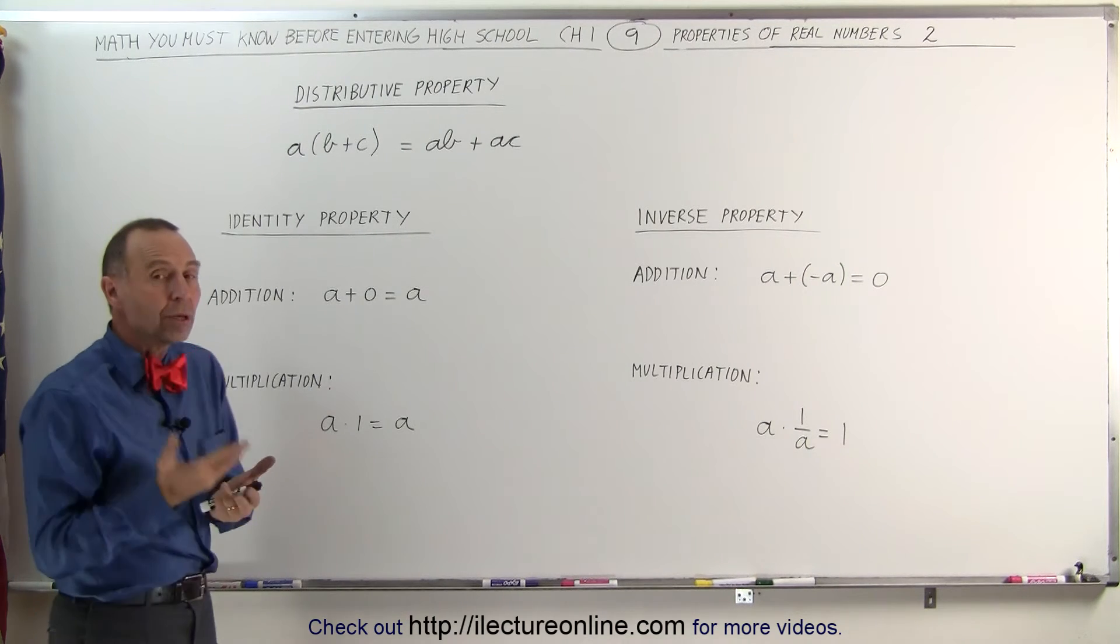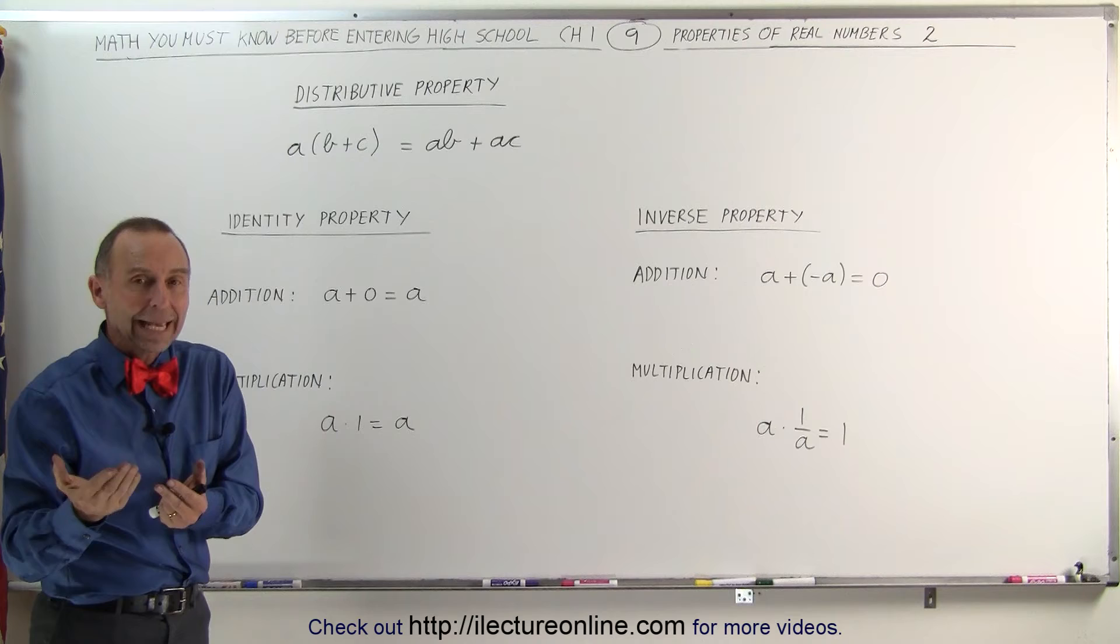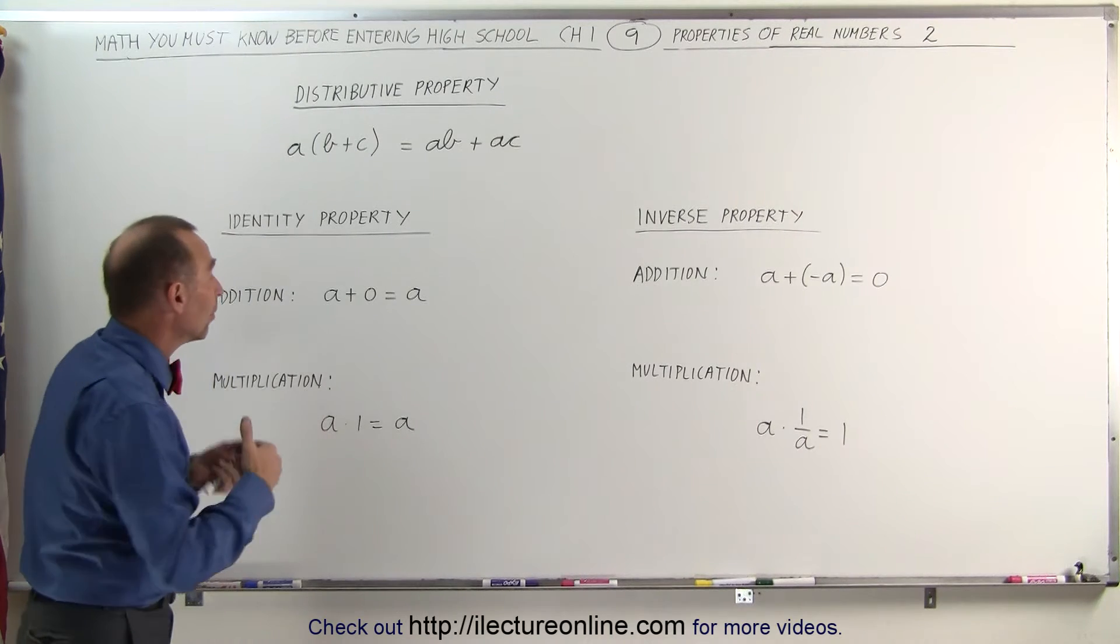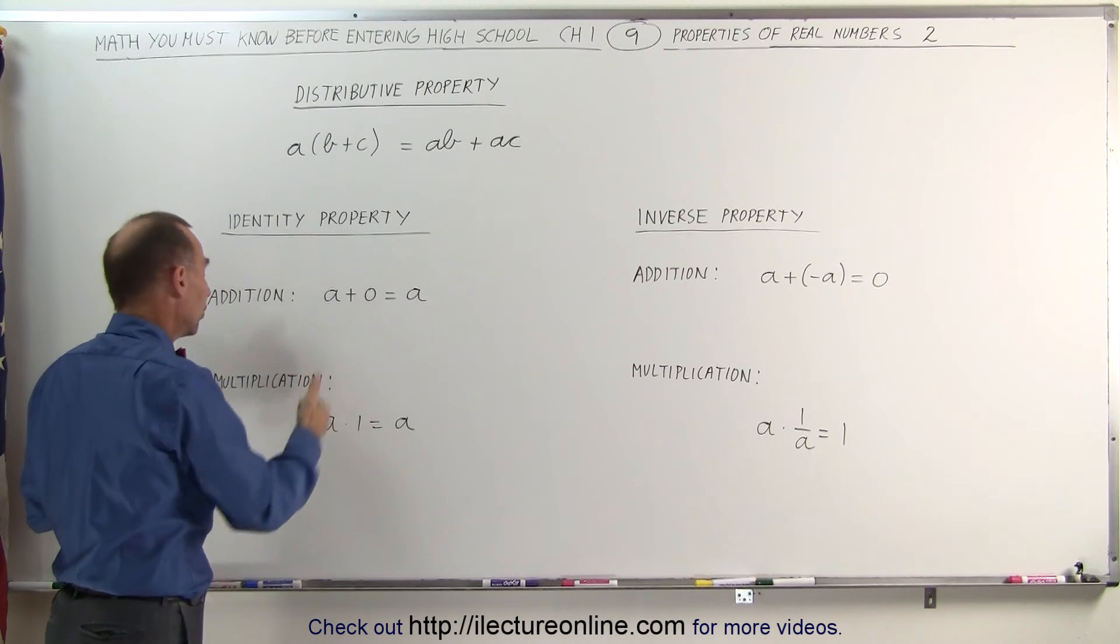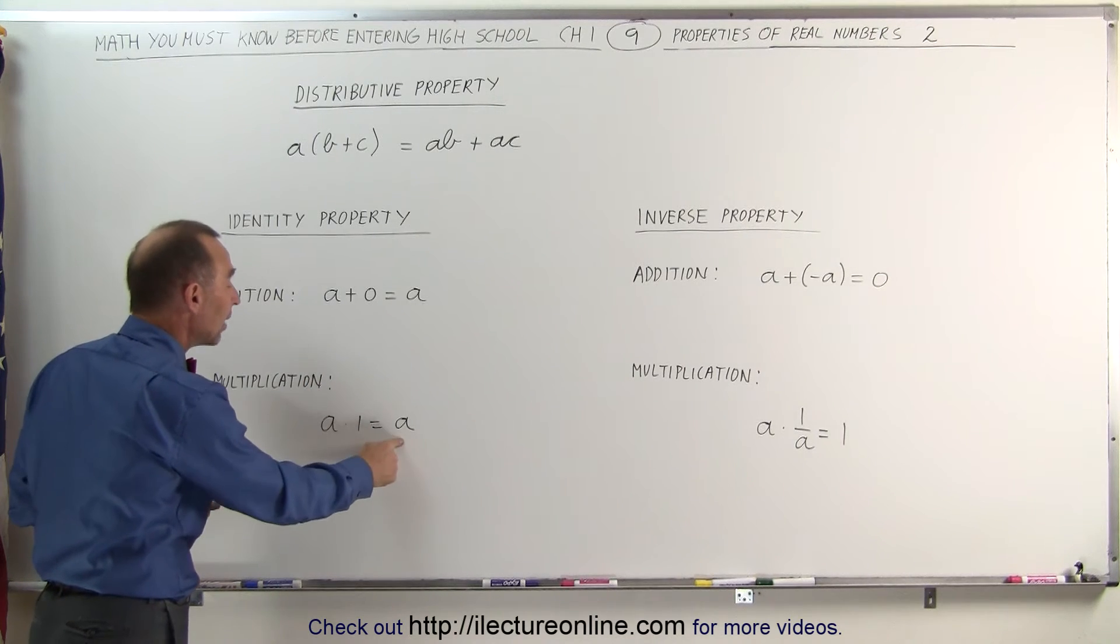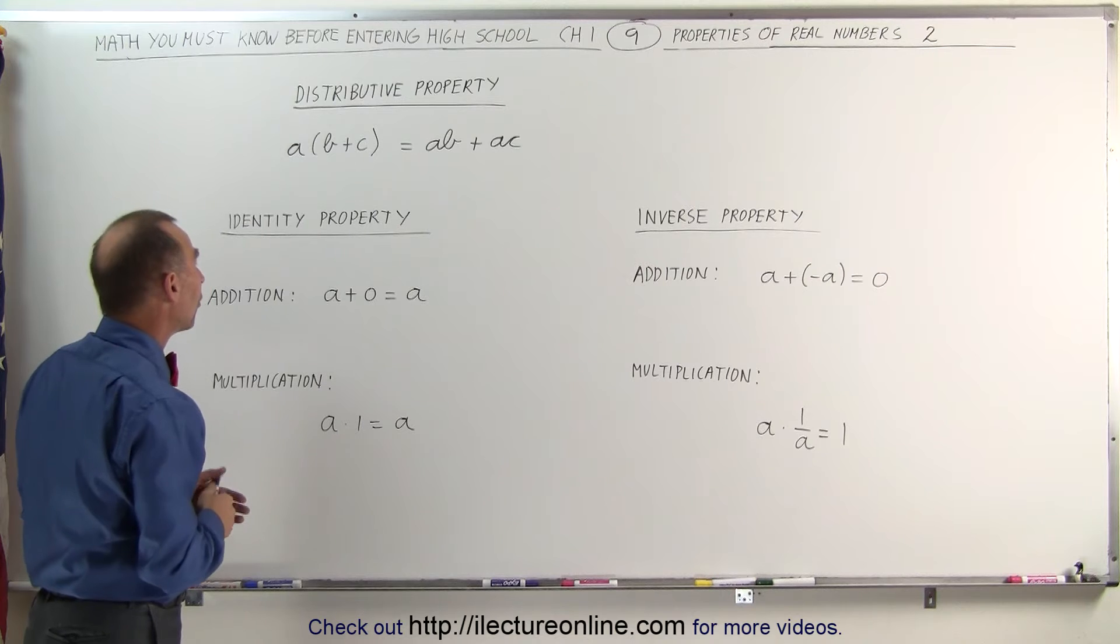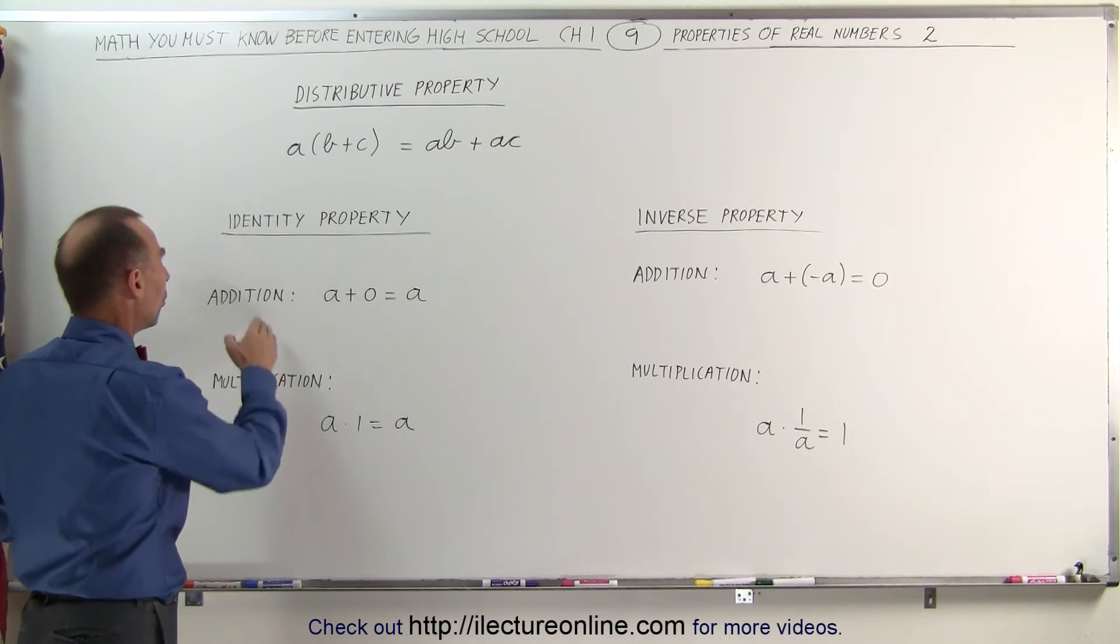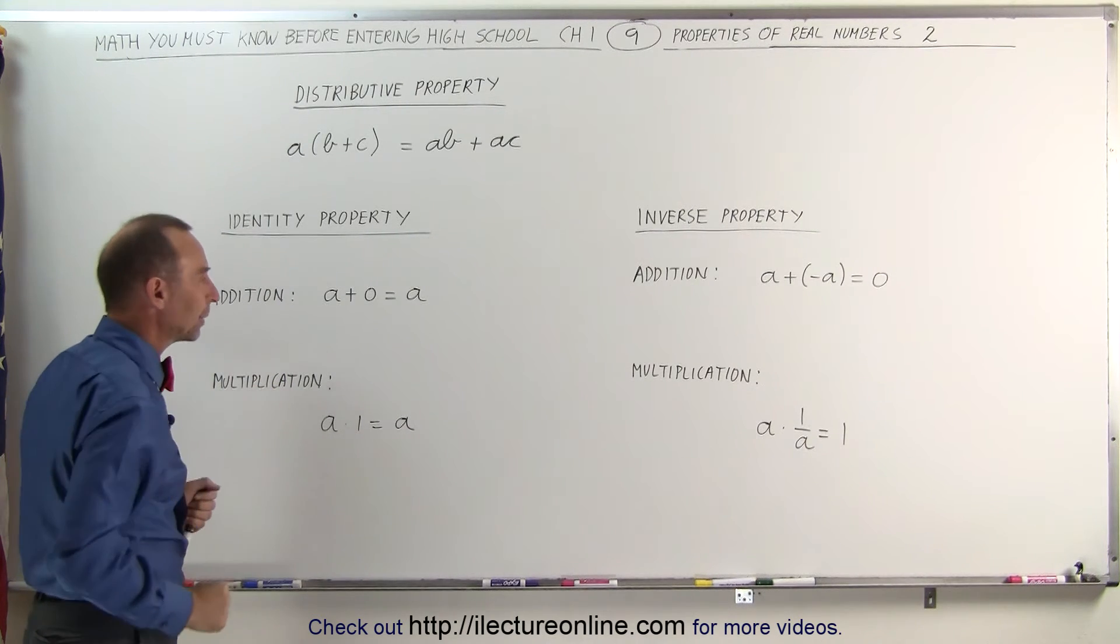In multiplication, we can multiply a number times 1 and get the same number back. So in addition, we add the number 0; with multiplication, we multiply by the number 1. A times 1 equals A. Those are the two cases of what we call the identity property, one for addition and one for multiplication.